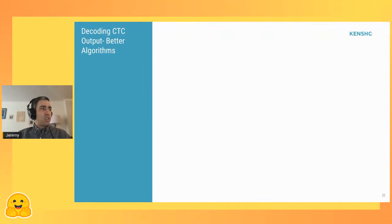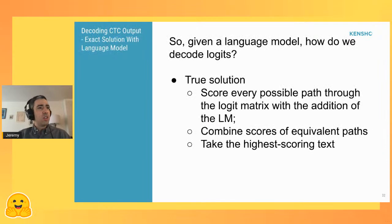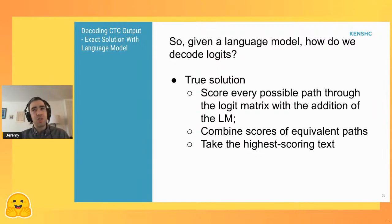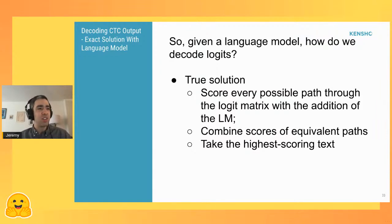Besides adding language models, we can try better algorithms. The true solution is to score every possible path for your logit matrix — including any language model information — combine scores of all equivalent paths to get a total score for some text, and take the highest-scoring piece of text. This gives you an exact solution, but the problem is that this is exponential complexity. With just 32 output characters and 10 output time steps, you already have something like 10 to the 15 paths, which makes this completely impossible in any realistic solution.